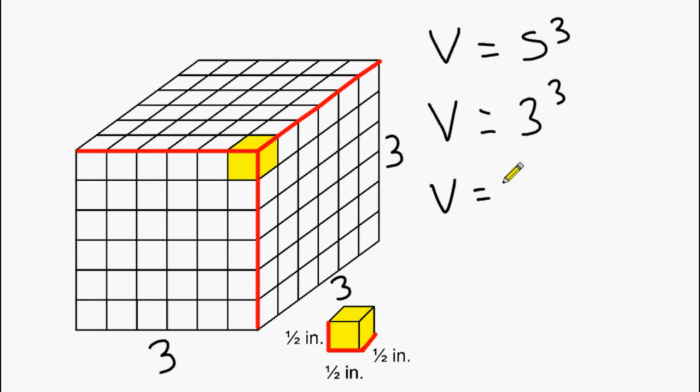Next I'm going to write three to the third power in expanded form. After we write in expanded form, we can multiply two numbers at a time. Three times three is nine, and now we have to multiply nine times three, and nine times three is twenty-seven. So we would say that the volume of this cube is twenty-seven cubic inches.